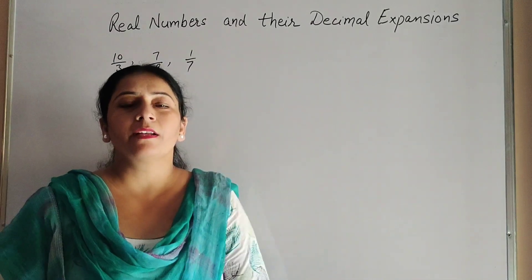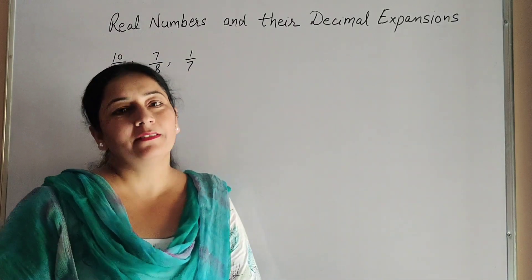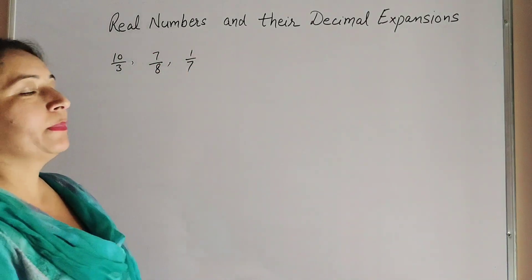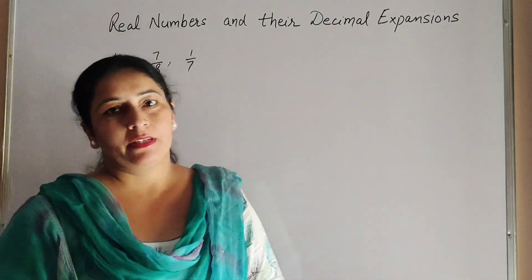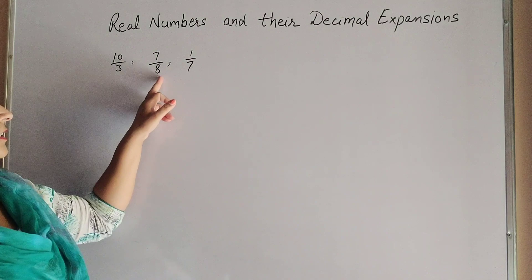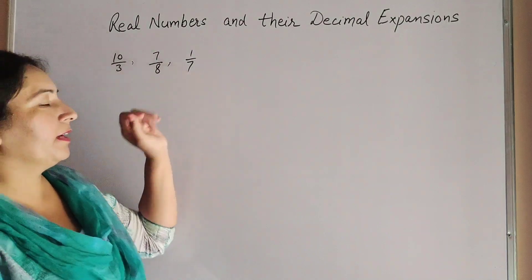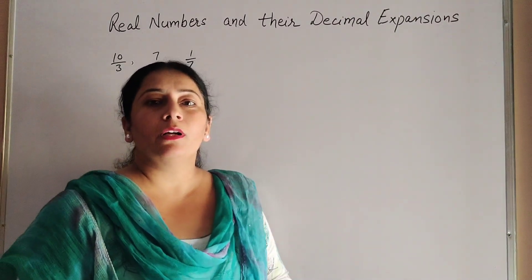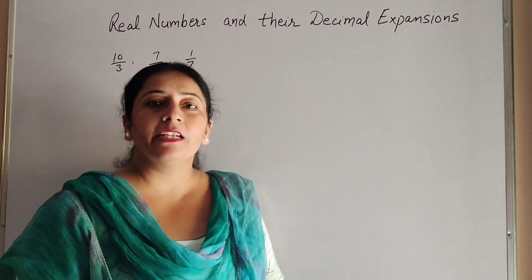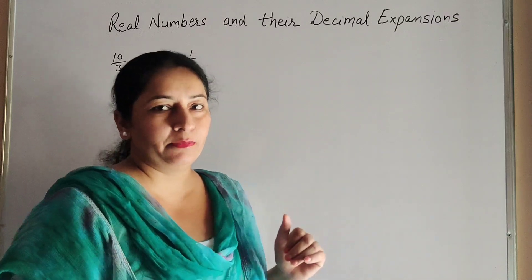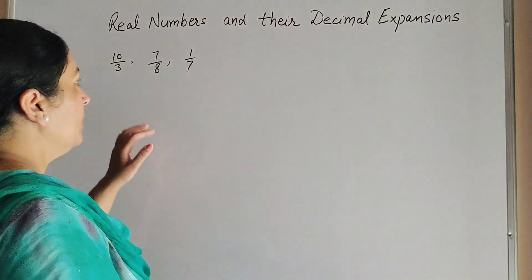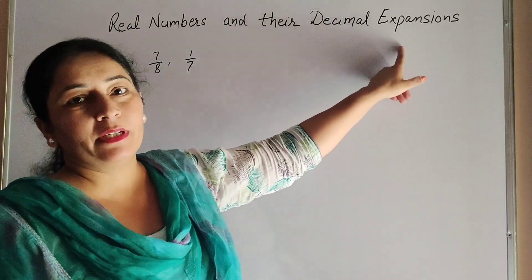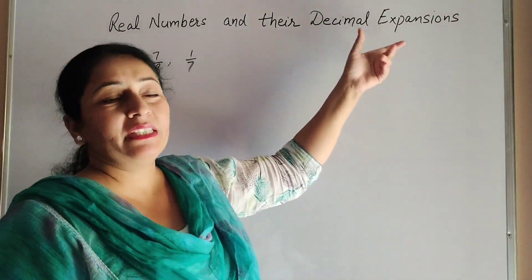Hello friends, welcome to my channel. In this video we discuss real numbers and their decimal expansion. Numbers like 10/3, 7/8, and 1/7 are all rational numbers. We know that all rational and irrational numbers are called real numbers. We will change these numbers into decimal expansion, meaning we write them in decimal form.